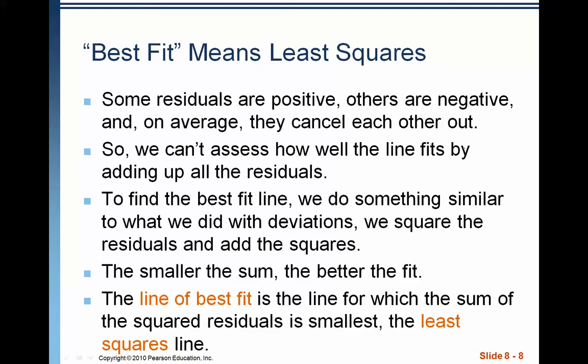But adding them up makes it messy because of the way that the positives and negatives cancel each other out. So what we do is something similar to what we did with the standard deviations. Instead of adding them together, finding the sum of them, we take the square of the residuals and add the squares. The smaller the sum of those squares, the better the fit. So the line of best fit is the line for which the sum of the squared residuals is smallest. In other words, the least squares line.